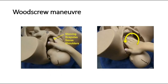Next is the wood screw maneuver. In this maneuver, the anterior shoulder is pushed towards the baby's chest and the posterior shoulder is pushed towards the baby's back, rotating the baby's head to face the mother's rectum. This maneuver is only tried after the McRoberts maneuver and application of suprapubic pressure have been attempted.